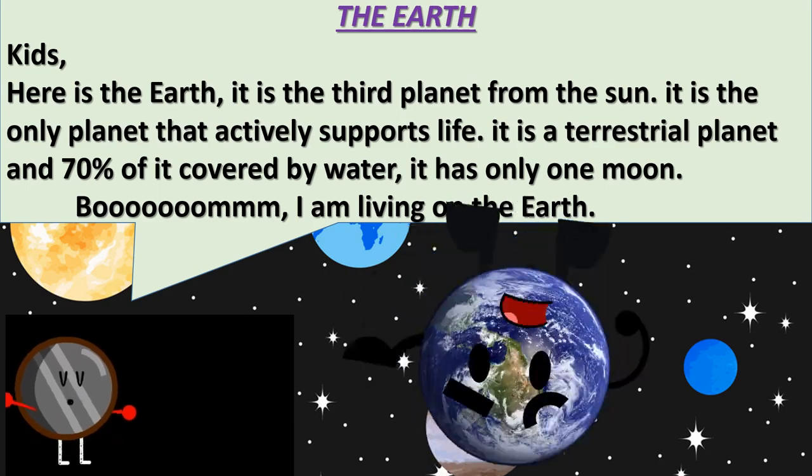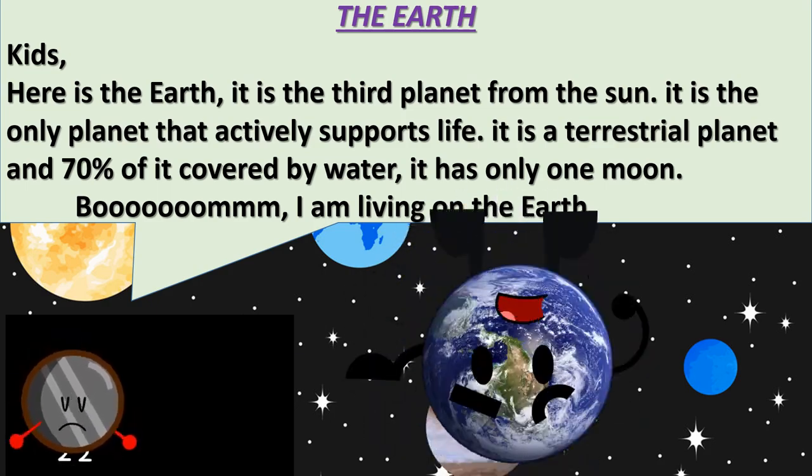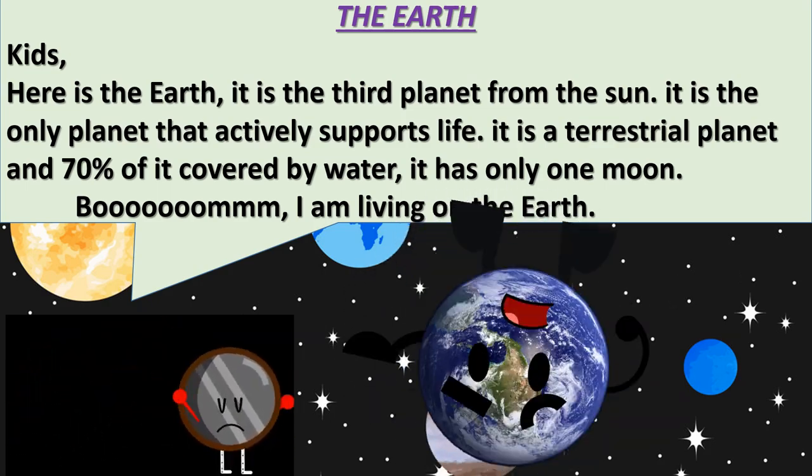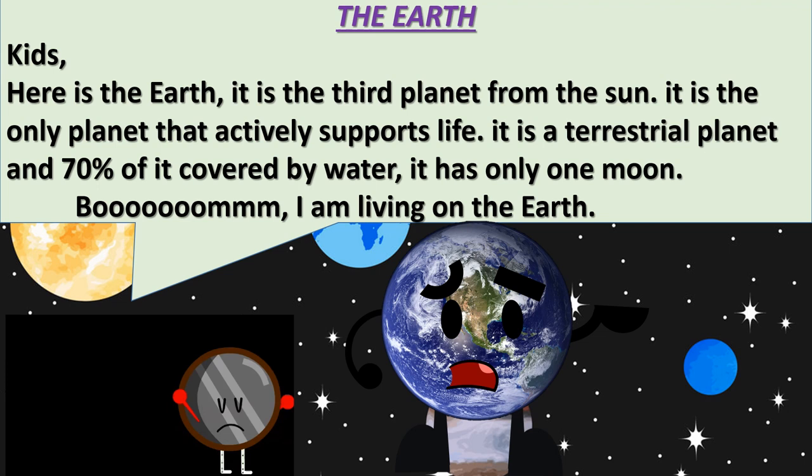The Earth. Kids, here is the Earth. It is the third planet from the sun. It is the only planet that actively supports life. It is a terrestrial planet and 70% of it is covered by water. It has only one moon. I am living on the Earth.